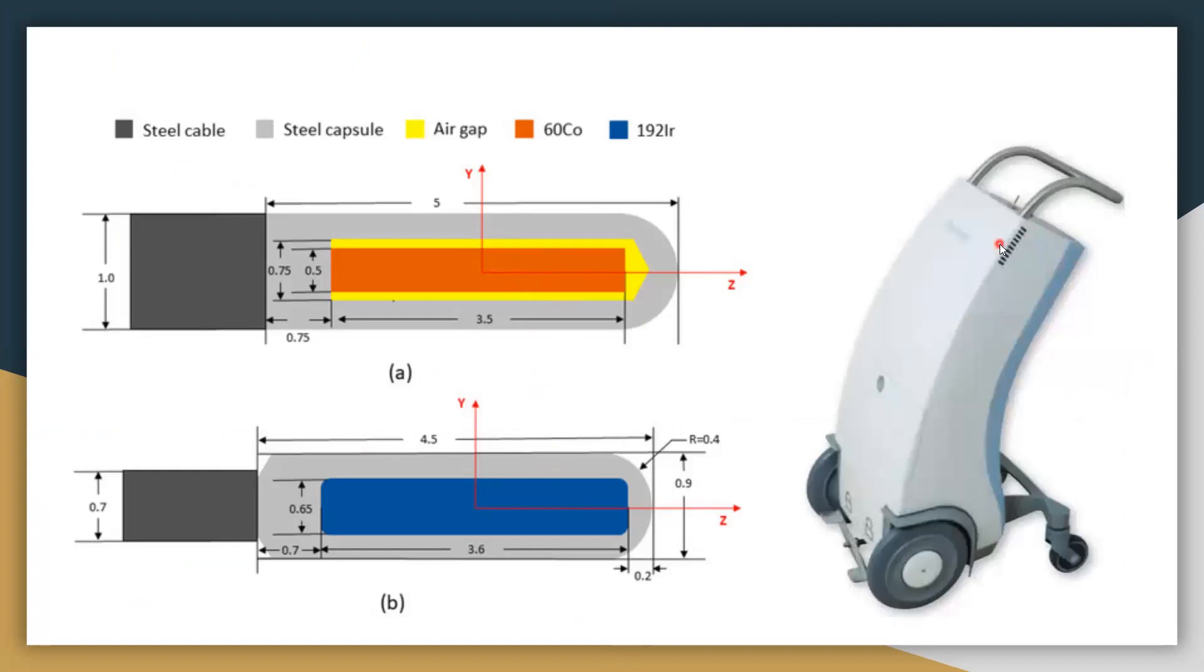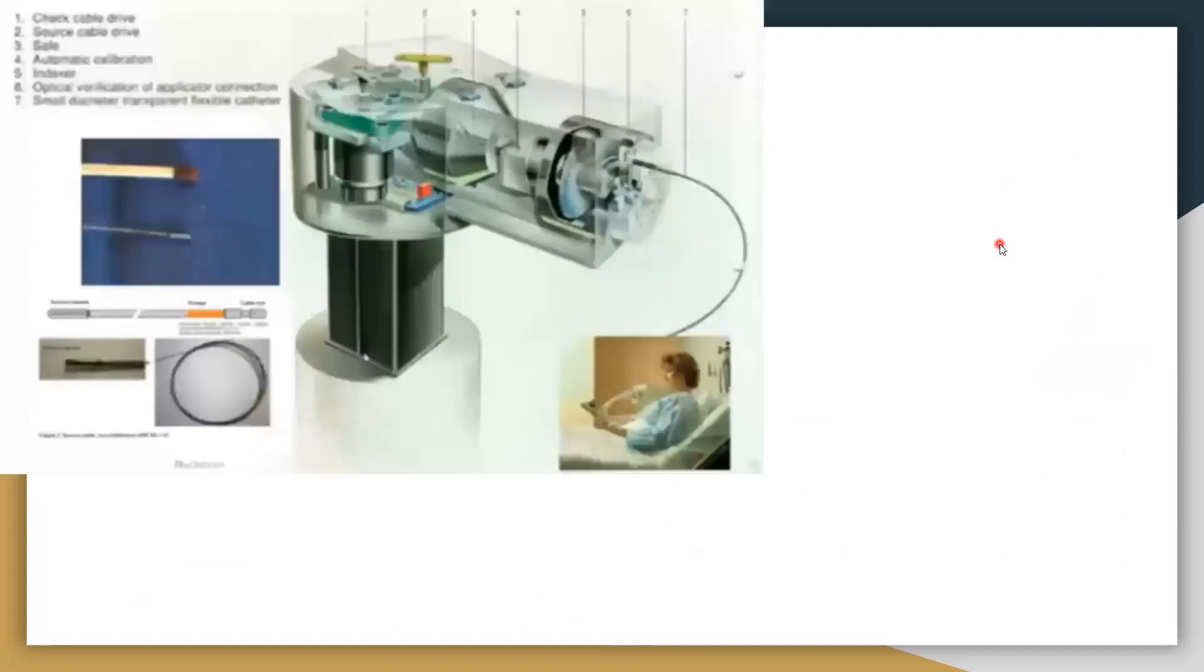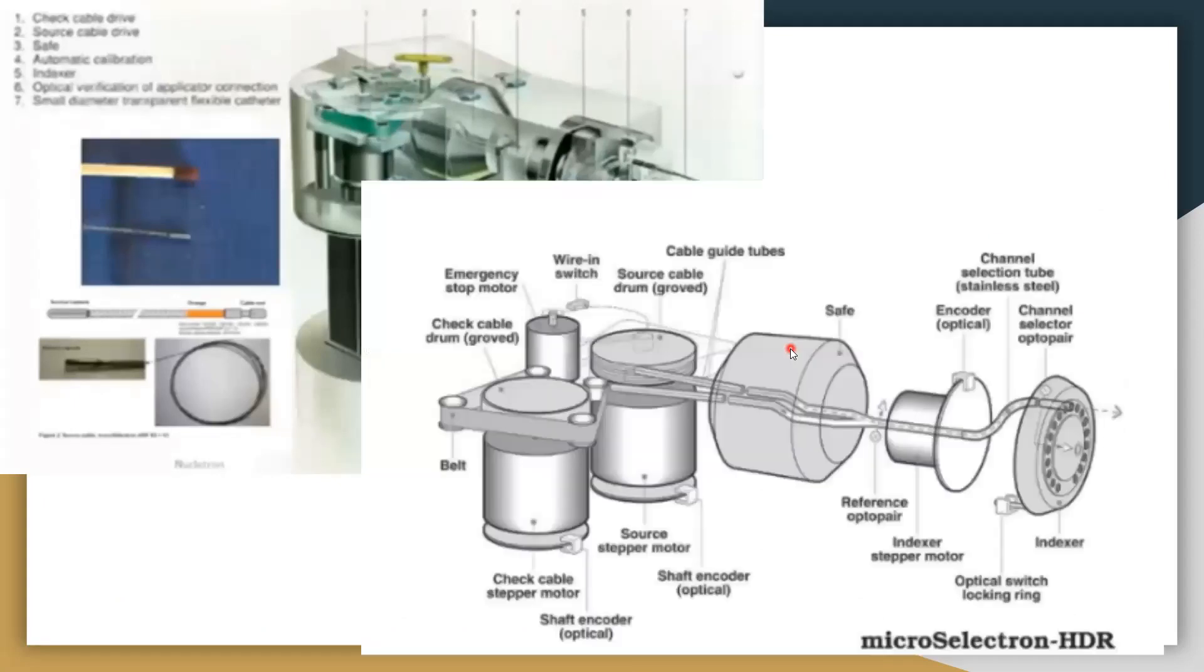This is the afterloader machine. This is the inside of the afterloader machine. Very robust system. Wire switch, emergency stop motor is there. Guide tube controls the movement of the source inside the patient. And the safety feature is the first, the dummy source will go and check the path, and then the iridium source will come.